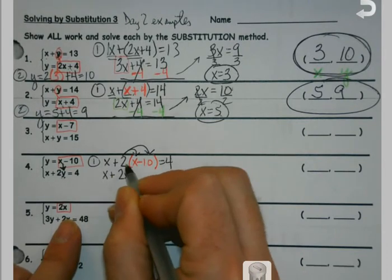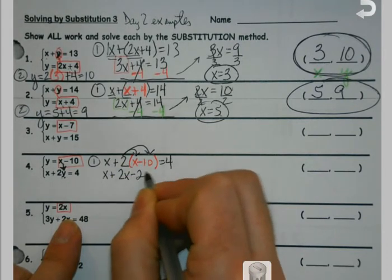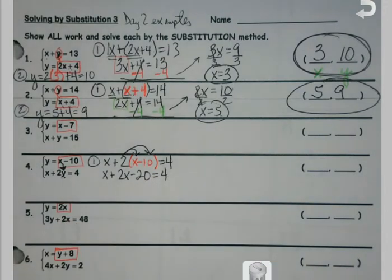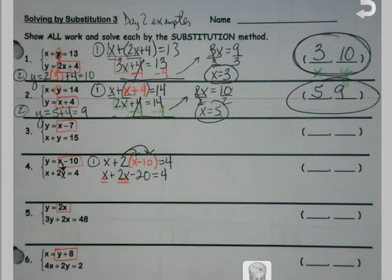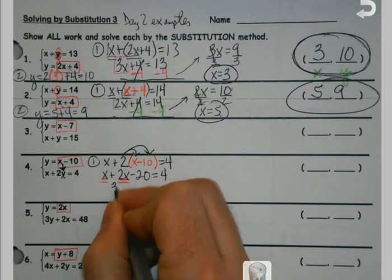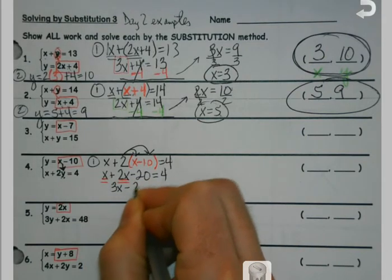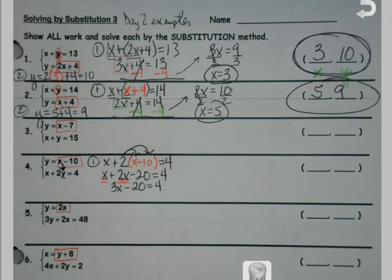So I've got 2x and 2 times negative 10 is minus 20. And my one other thing that's different here is I've got those like terms. So if I got 1x, I add 2 more to it, gives me 3.